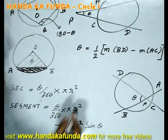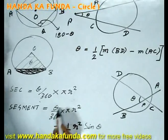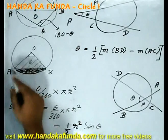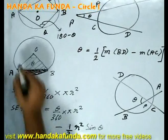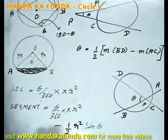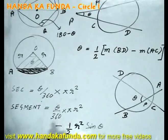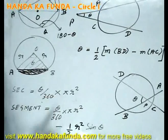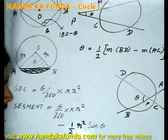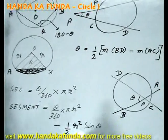Area for that is given by area of the sector, which we already know, theta by 360 into pi R square, minus the area of the triangle OAB. How do I get that? Both the radii are there, the angle is theta. For a triangle, if I know two sides A and B and the angle theta, the area is given by half AB sine theta. So, this becomes half R square sine theta.